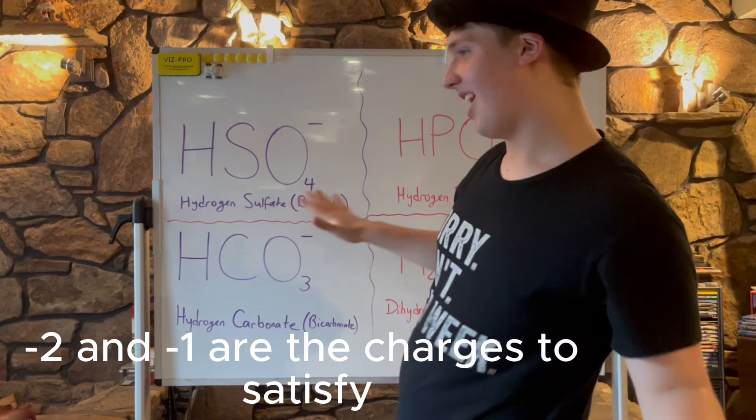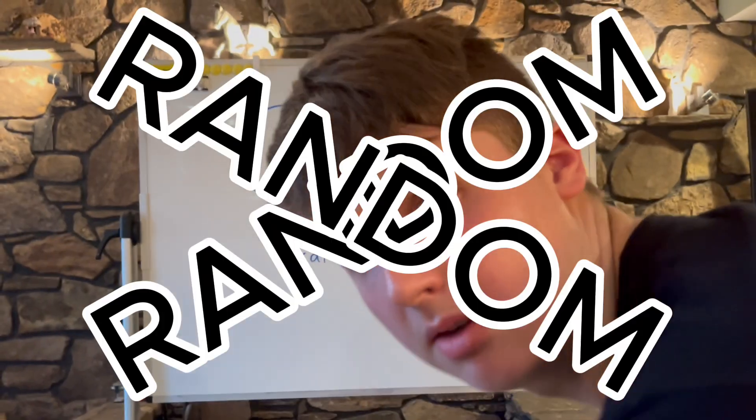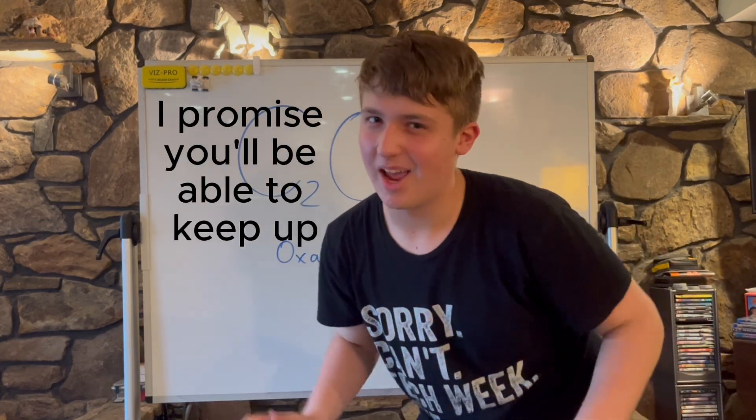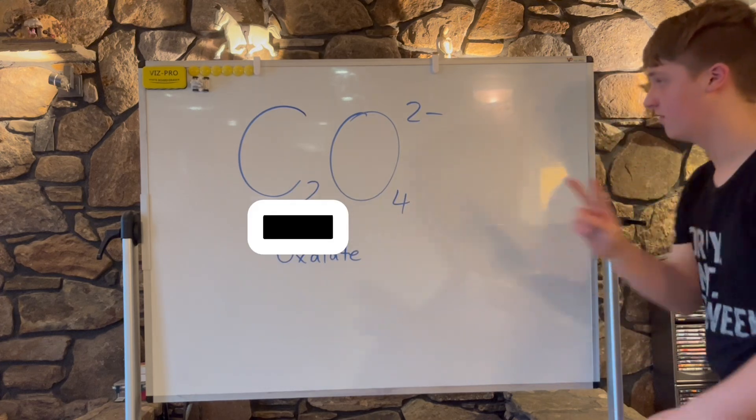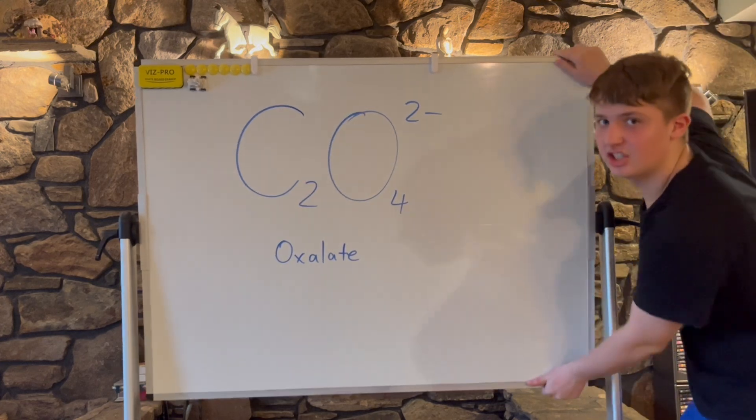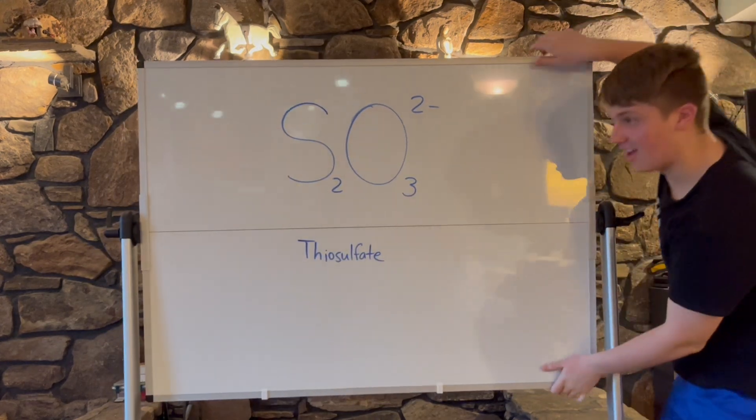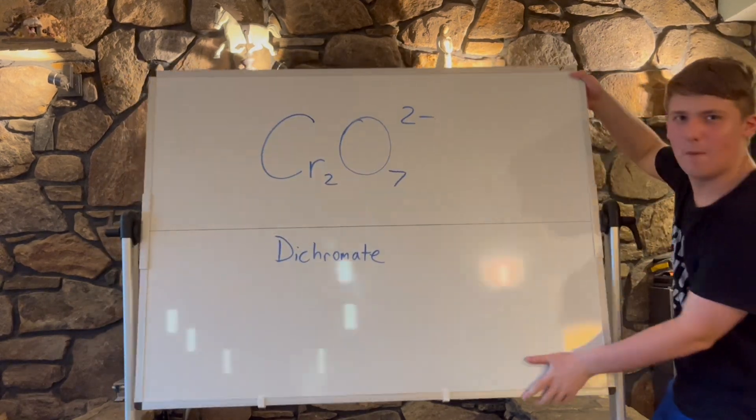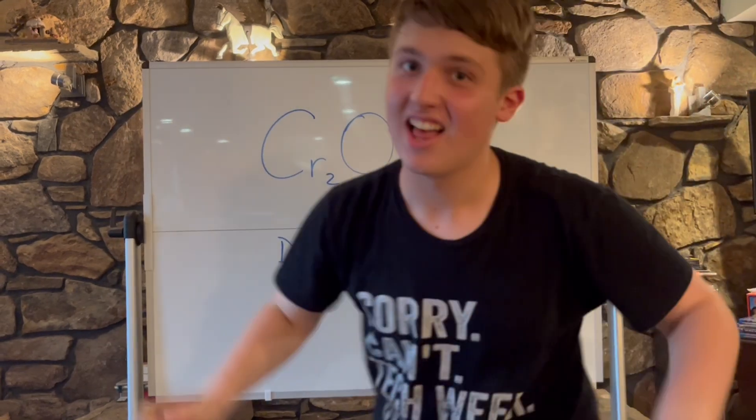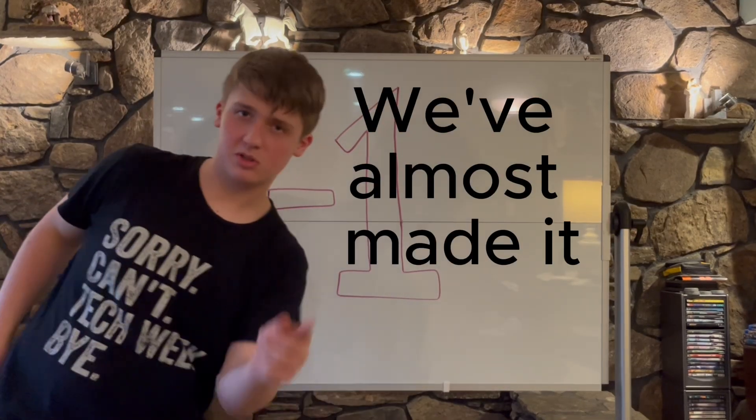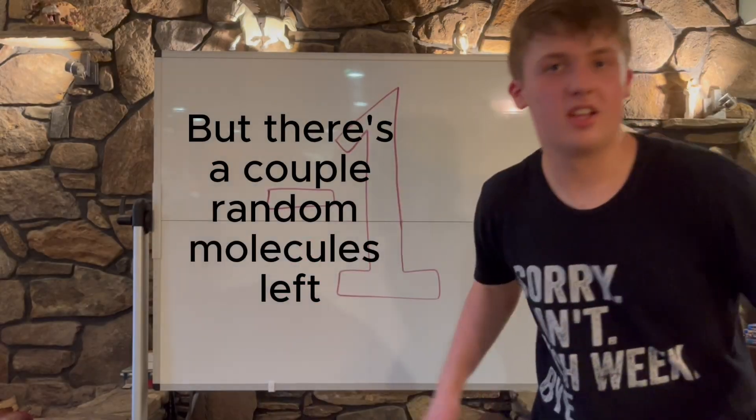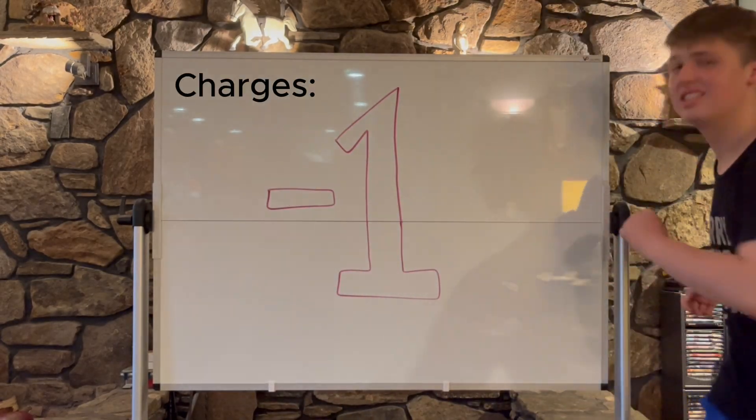There's a couple that are a little random, so we'll just go through. I promise you'll be able to keep up, and all their charges are negative two: oxalate C2O4, thiosulfate S2O3, chromate CrO4, dichromate Cr2O7. That's easy. We've almost made it to the positive ions, but there's a couple random molecules left.